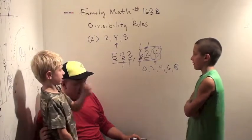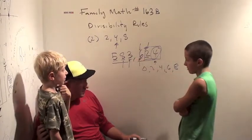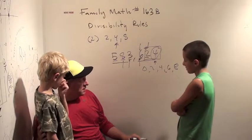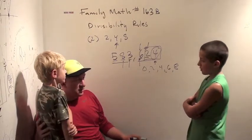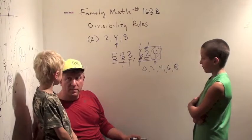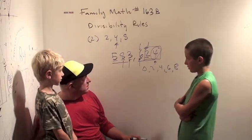8, you have to check the last 3 because 3,000 is divisible by 8 because 1,000 is. What's 1,000 divided by 8? It's 125. It's 5 cubed times 2 cubed.